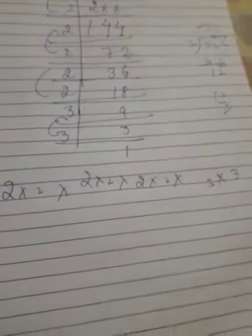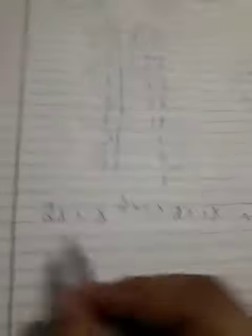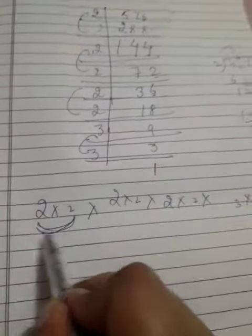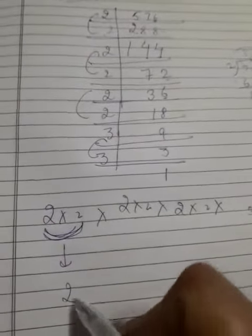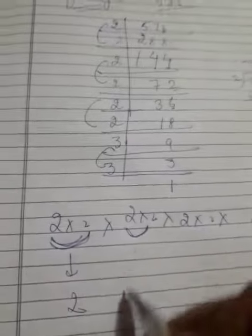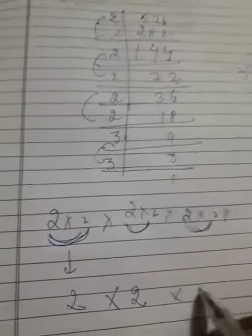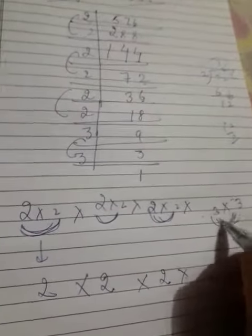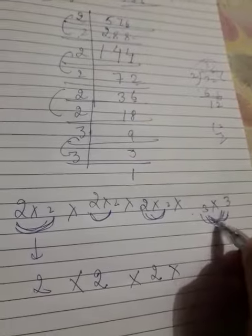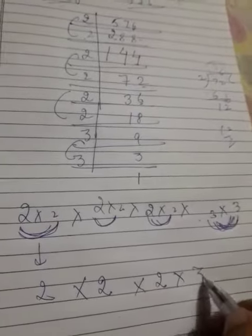As we know, we want to find the perfect square. 2 times 2 is 4, and 4 is a perfect square of 2. 2 times 2 is 4, 4 is a perfect square of 2. 3 times 3 is 9, and 9 is a perfect square of 3.